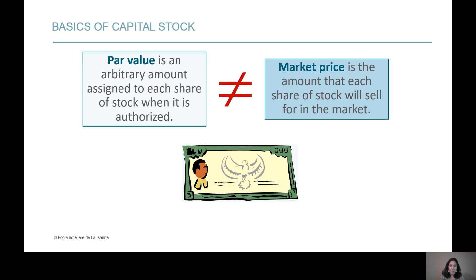The market price of the share is the price at which the stock will sell in the market. The par value is something that does not change — it is this arbitrary amount that does not fluctuate over time. So let me show you how you're going to issue a share that comes with a par value.